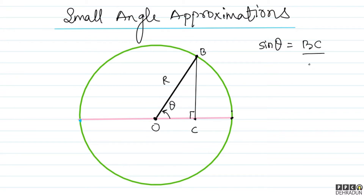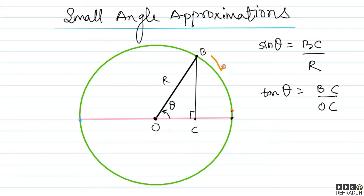So, the perpendicular BC upon hypotenuse gives us sin theta. And tan theta is perpendicular upon base, which means BC upon OC. Now think — if I move the B-point and pass through the C-point on the circle's periphery, and drop a perpendicular, the arc B'C' and the straight line B'C' become almost the same thing.